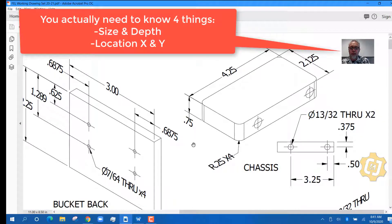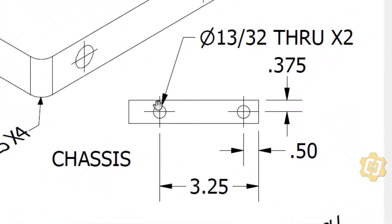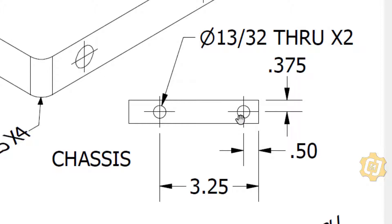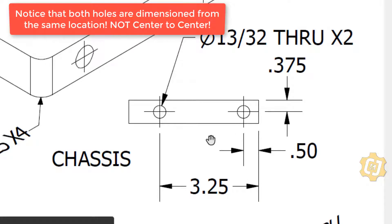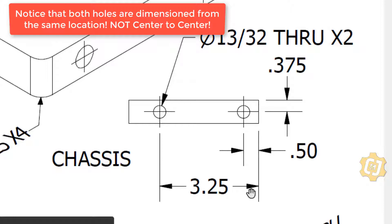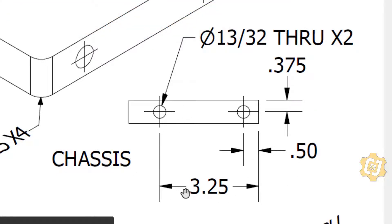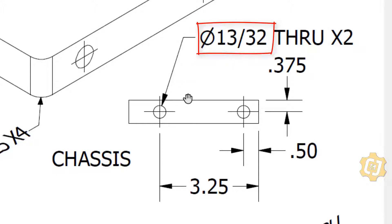There are two holes in this part. You need to know four things: depth, X location, Y location, and size. Looking at the drawing, the first hole is 0.5 units from this edge and 0.375 from the top edge. The second hole is also 0.375 from the top edge, and — being careful here — it is 3.25 units from the same edge. So both measure from the same edge, and both are 0.375 from the top. The diameter is 13/32nds, they go all the way through, and there are two of them.